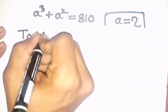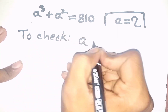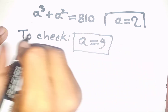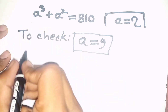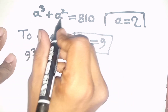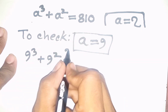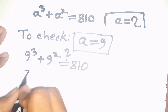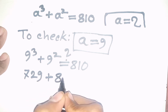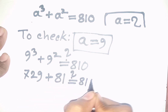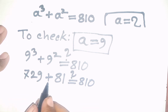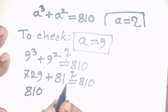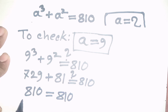To check, for a = 9: our equation is a³ + a² = 810. So we can write 9³ + 9² = 810. Now 9³ = 729 and 9² = 81, so 729 + 81 = 810, which equals 810. Left side equals right side. So our correct and final answer is a = 9.